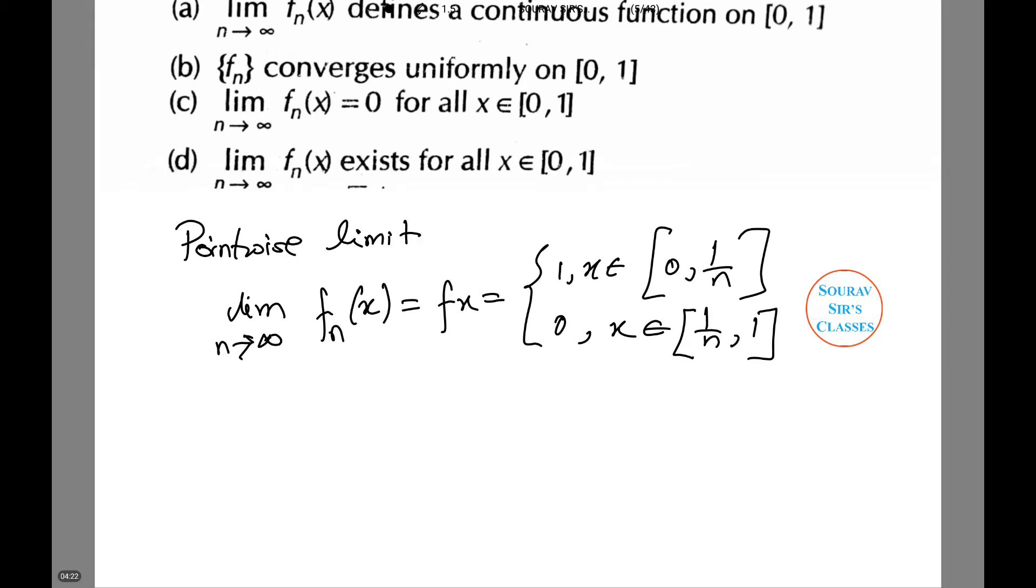Let the pointwise limit be limit n tends to infinity f_n(x) equals f(x). Therefore, limit n tends to infinity f_n(x) exists for all x belonging to [0,1].